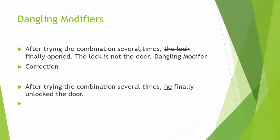The next one: 'After trying the combination several times, the lock finally opened.' This is a dangling modifier because it sounds like the lock is trying the combination, but it's impossible for the lock to do that. You need to add a subject or change the sentence around. Here's how you could fix it: 'After trying the combination several times, he finally unlocked the door.' It should be a person — Tom, Mary, he, or she — who tried the combination.